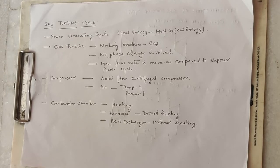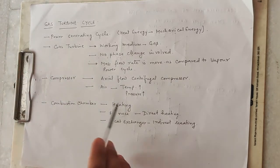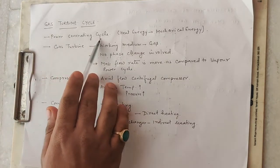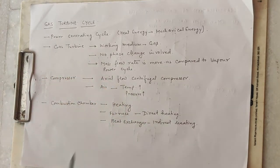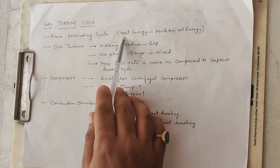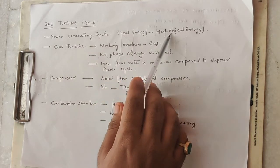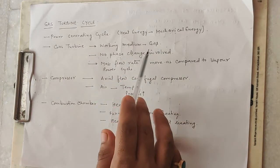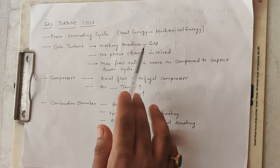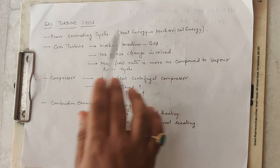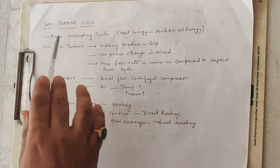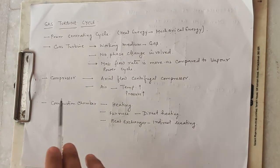Hello everyone! Today we are going to talk about gas turbine cycle. Gas turbine cycle is a power generating cycle — that means it generates power. Heat energy is converted into mechanical energy and work produces power. That is why we are talking about a power generating cycle.